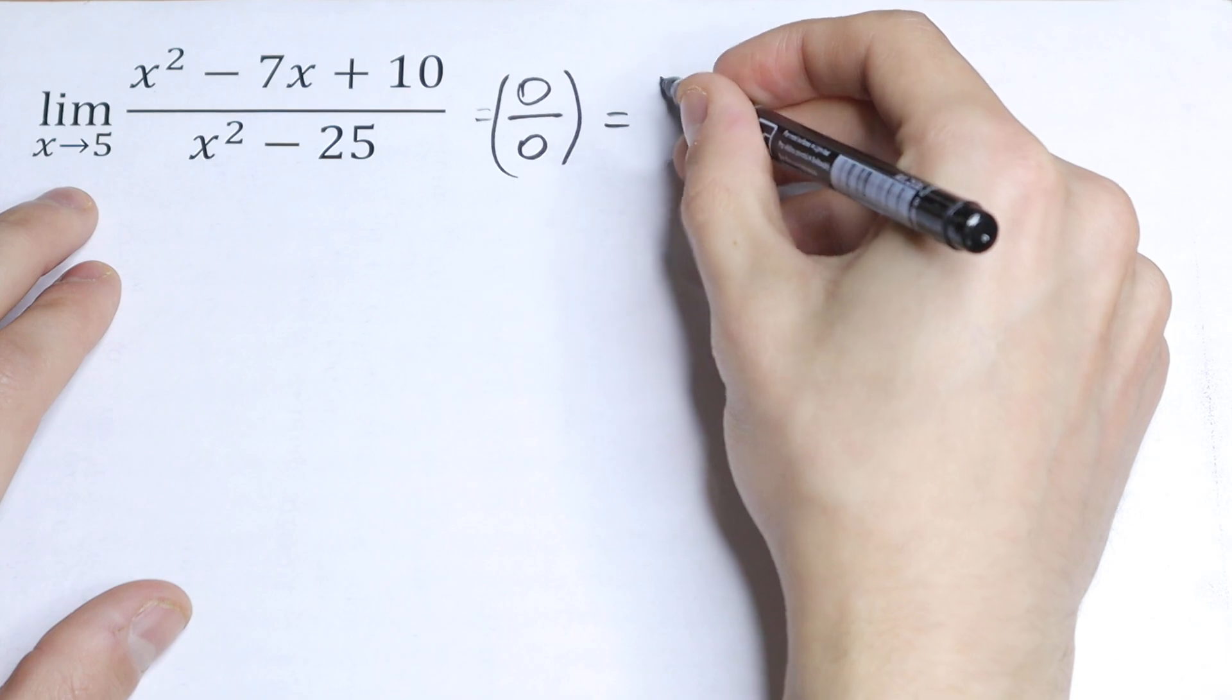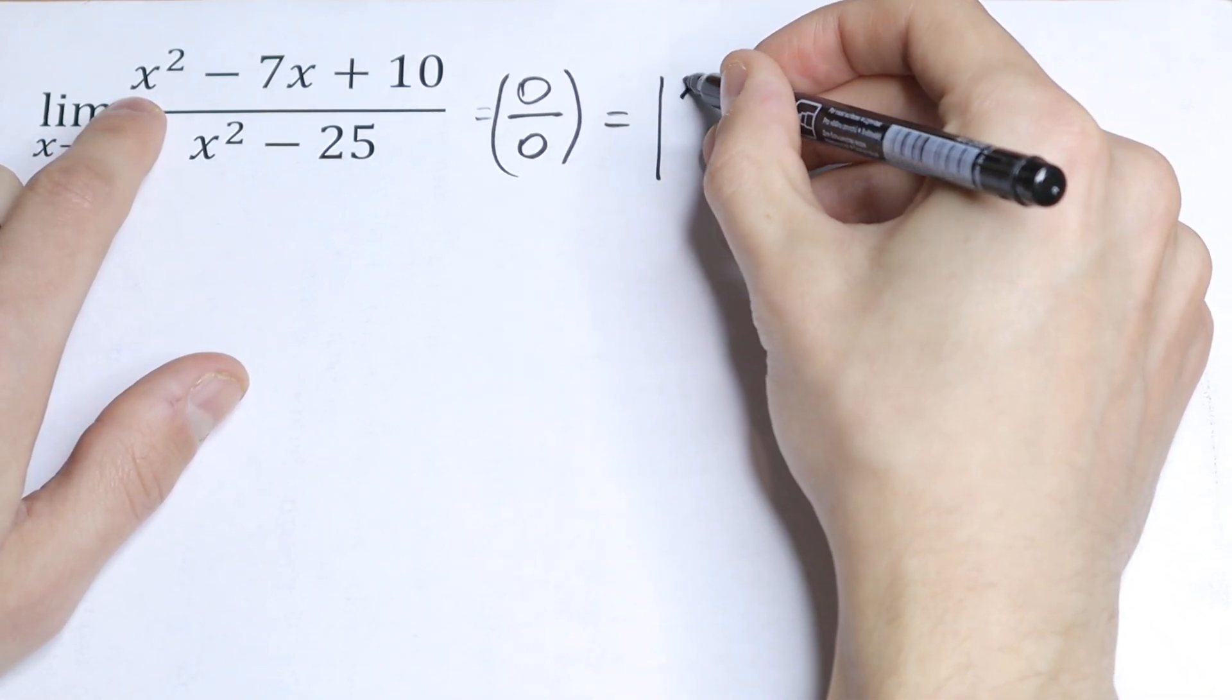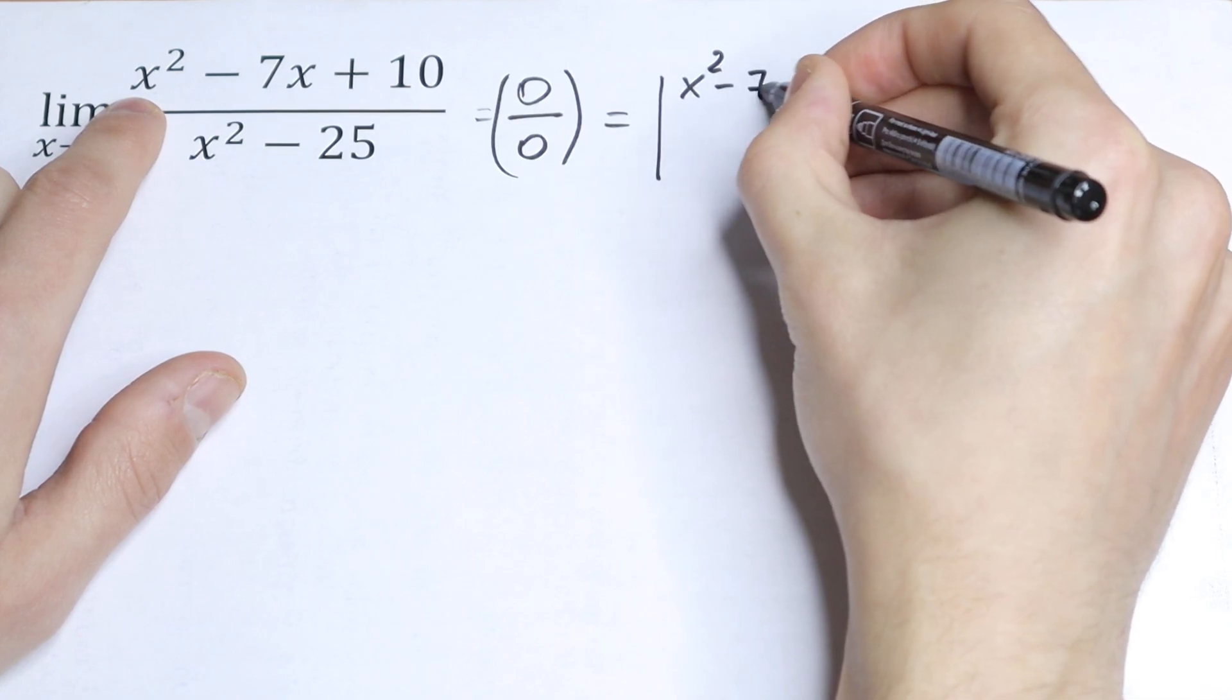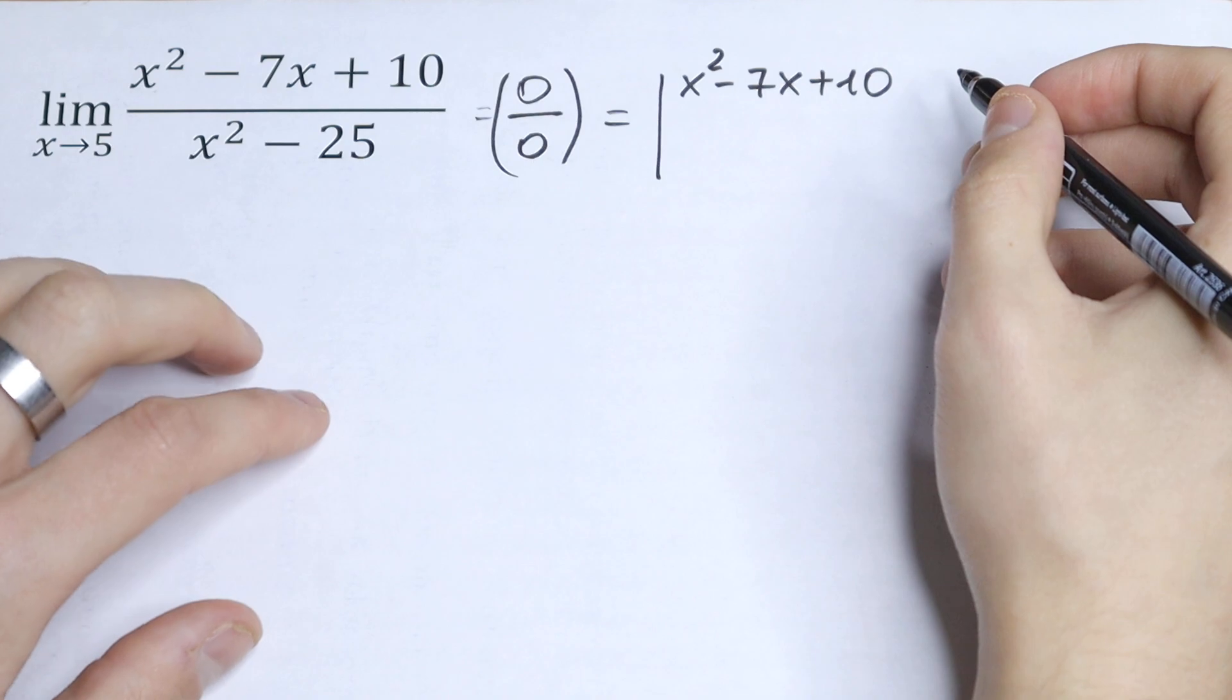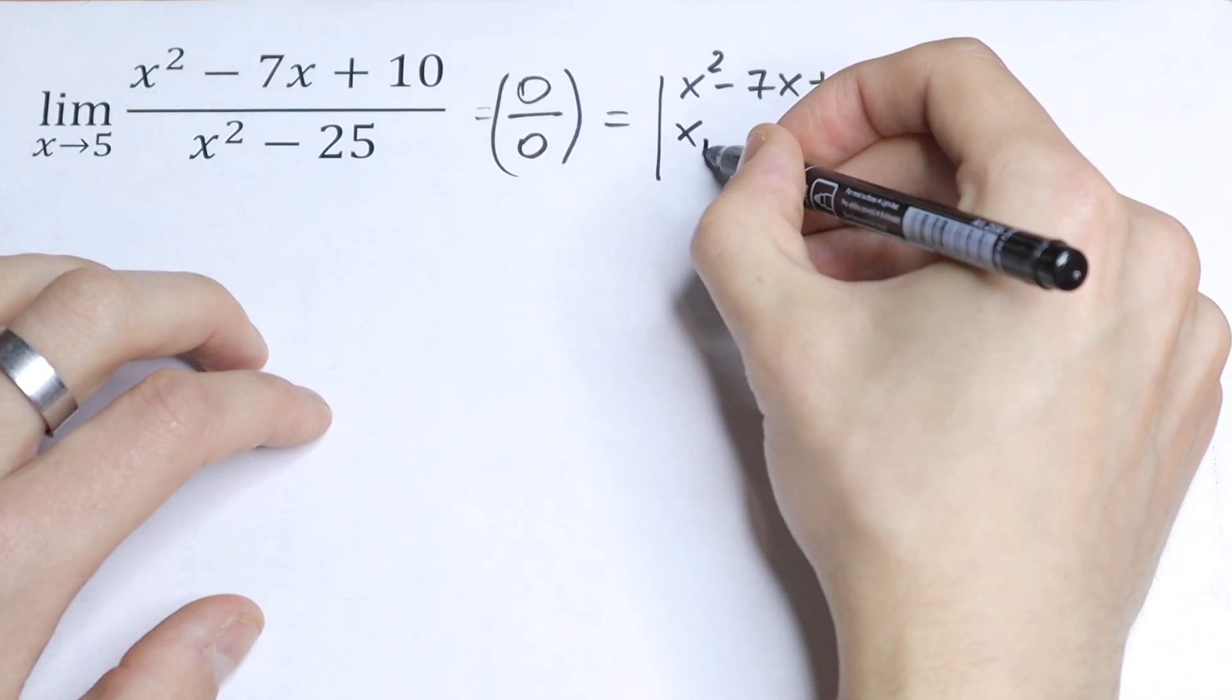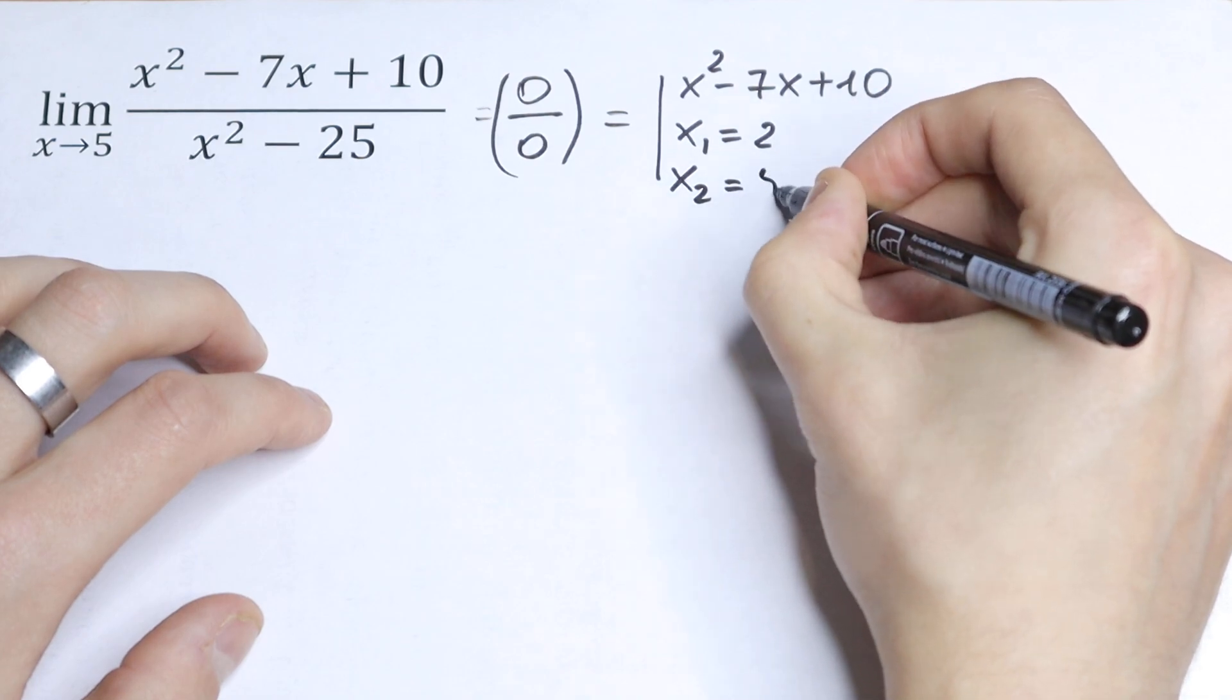Take a look. In the numerator we have a quadratic equation: x squared minus 7x plus 10. We know the roots to this quadratic equation. x₁ equals 2 and x₂ equals 5.